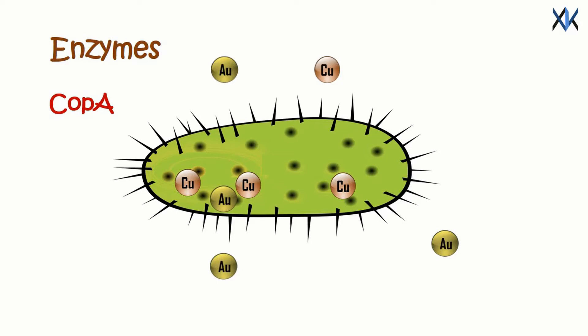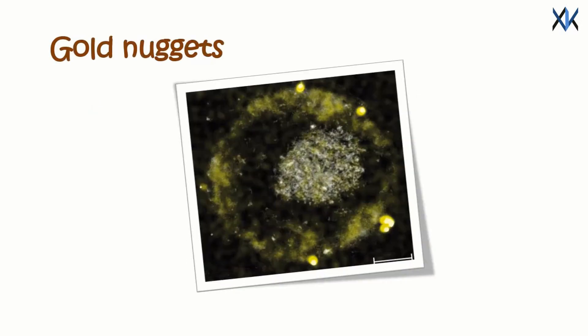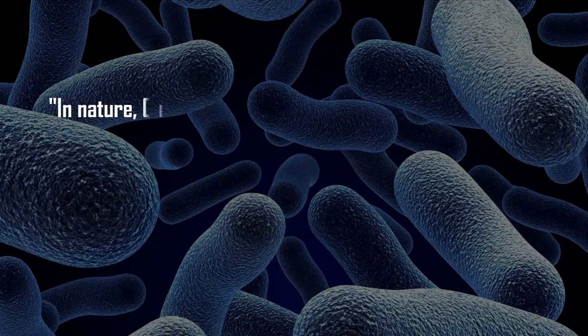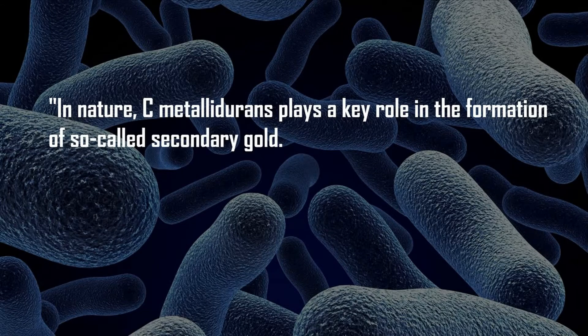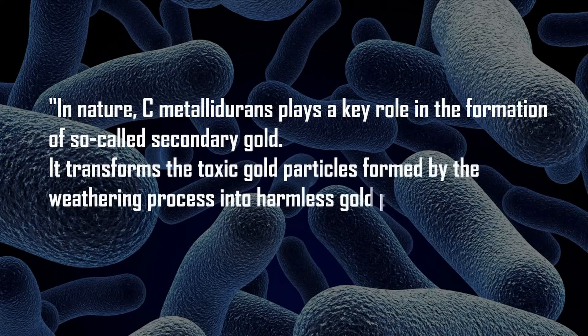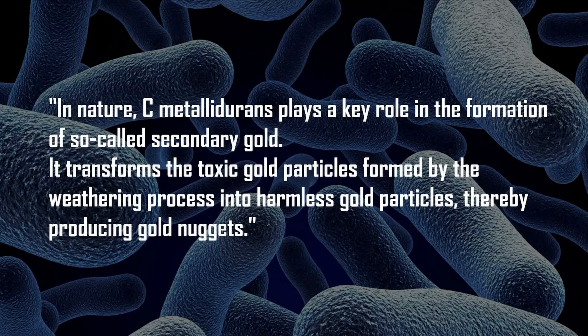Now the gold compounds that are difficult to absorb are transformed into harmless gold nuggets in the outer area of the cell. These nuggets are only a few nanometers in size. In nature, C. metallidorans plays a key role in the formation of so-called secondary gold. It transforms the toxic gold particles formed by the weathering process into harmless gold particles, thereby producing gold nuggets.